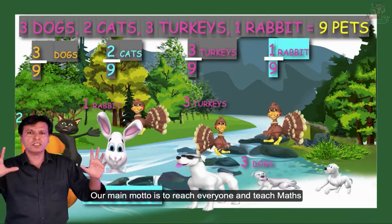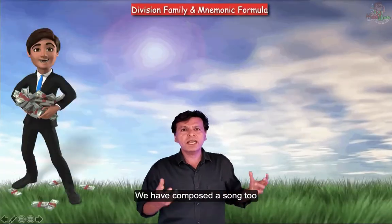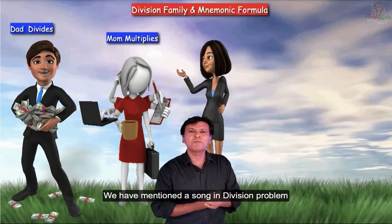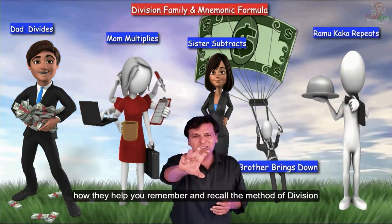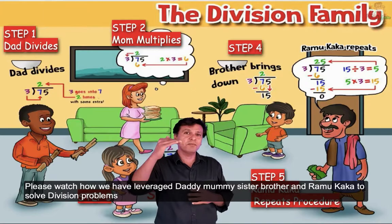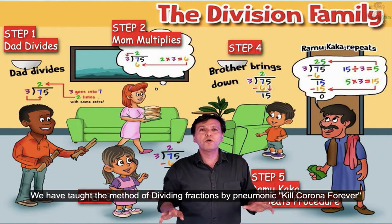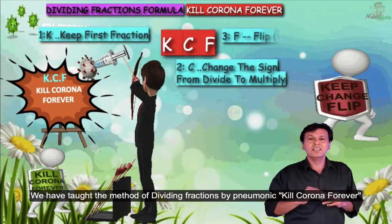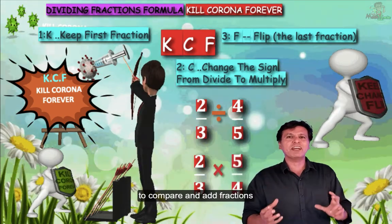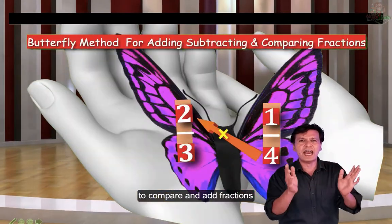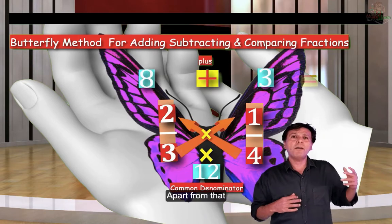Our main goal is to understand maths — maths will be very easy to do, because no child should struggle with this. We have made a song called Divisions, to tell you: Daddy, Mommy, Sister, Brother, and Ramukaka — how to tell the whole division formula. We have given you a butterfly effect: how to compare fractions, how to add, how to subtract.